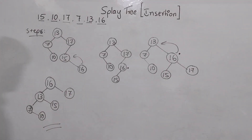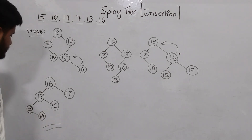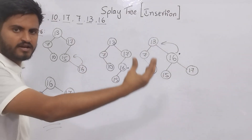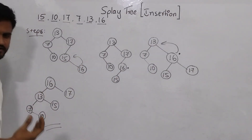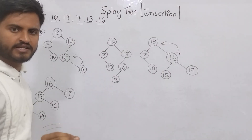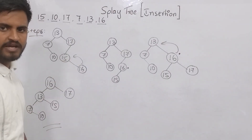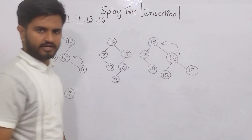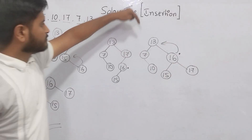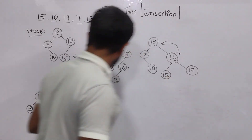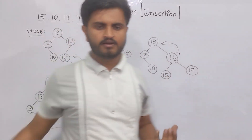This is the complete splay tree for the given list of elements. To summarize: insert the value by comparing — if greater, go right; if less, go left. Then apply the splaying operation — make the inserted node the root by replacing it one level at a time upward. After reaching the root, compare elements from upside to downside, left side to right side, and place them accordingly. That gives you the complete answer.